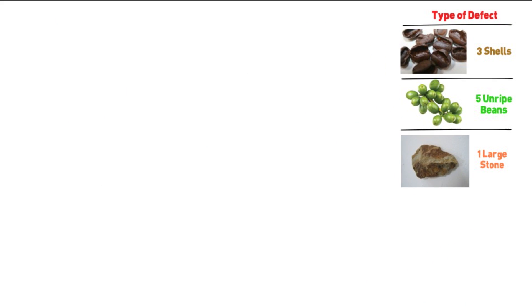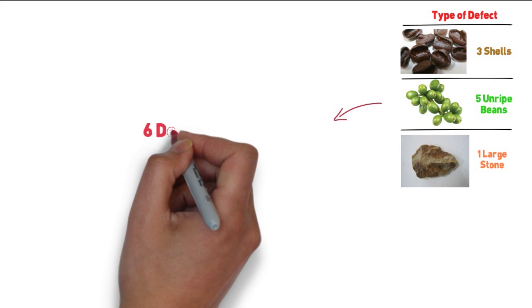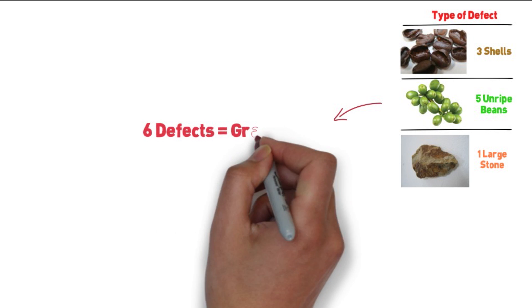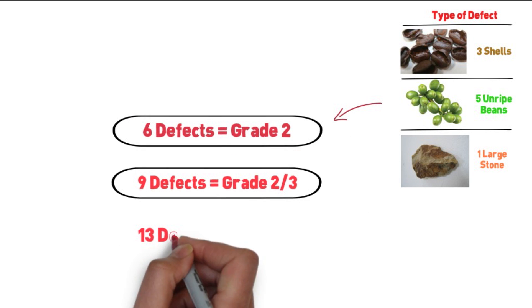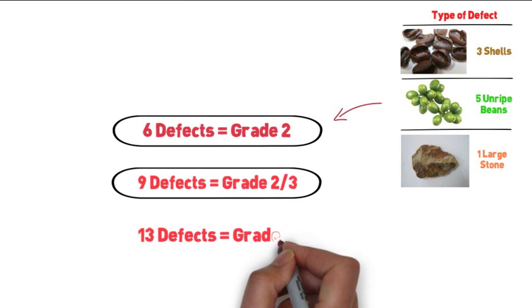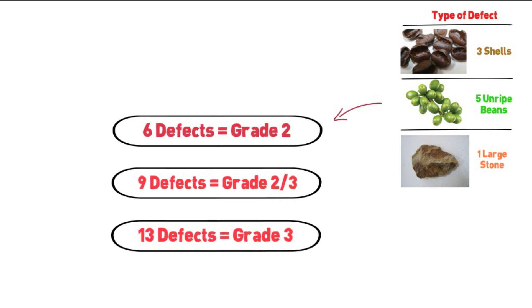Six defects is considered a grade two, nine defects is a grade two to three, and thirteen defects is a grade three. Several irregularities can amount to one defect depending on the result of the cup.